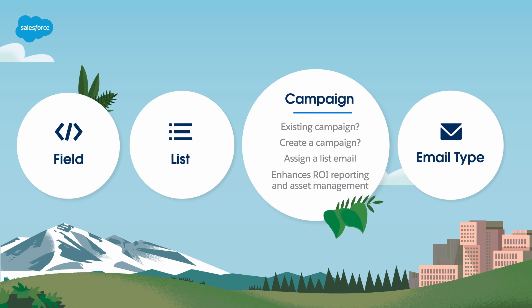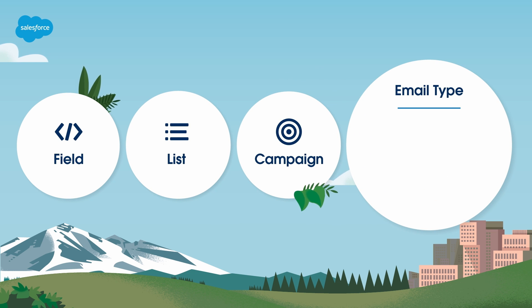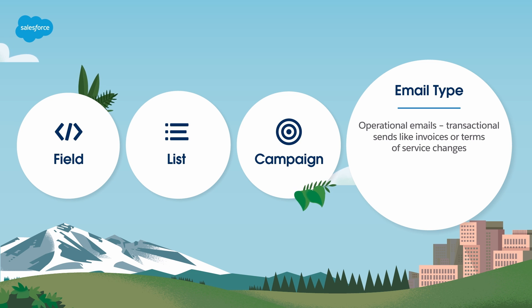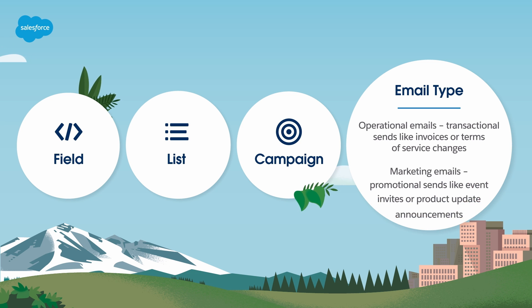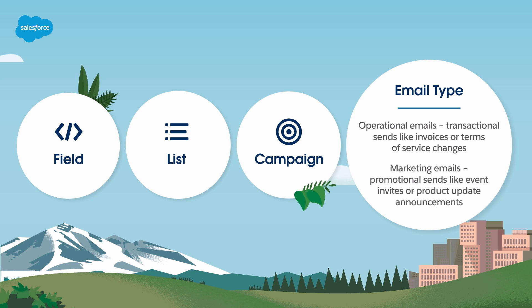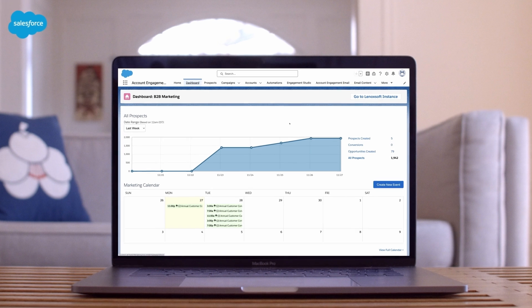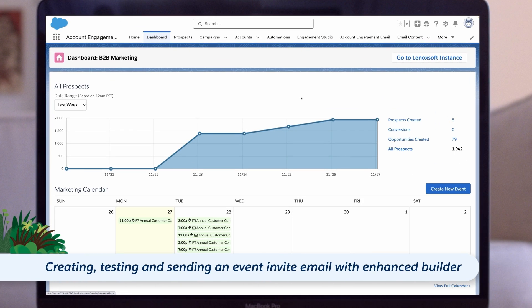And finally, determine if the list email is operational or marketing. Operational emails are for transactional sends like invoices or terms of service changes, while a marketing email would be for promotional sends such as event invites or product update announcements. Now let's jump into a demo to see these concepts in action by creating, testing, and sending an event invite email using the enhanced email builder.